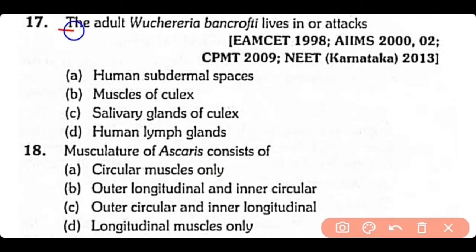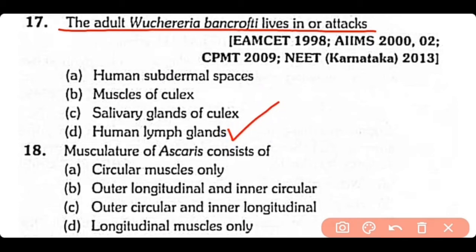Question 17: The adult Wuchereria bancrofti lives in — (A) human subdermal spaces, (B) muscles of Culex, (C) salivary glands of Culex, or (D) human lymph glands? The correct answer is Option D. Adult Wuchereria bancrofti attacks the human lymph glands.